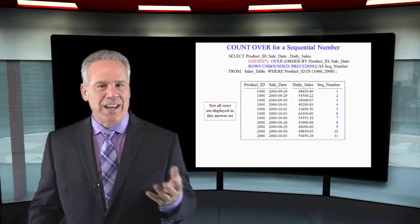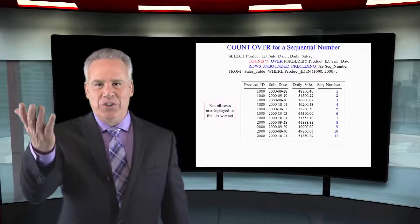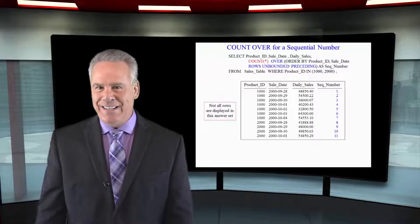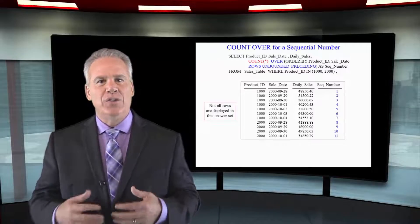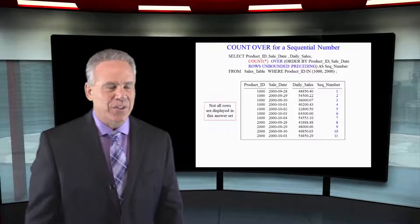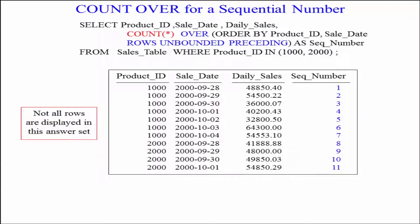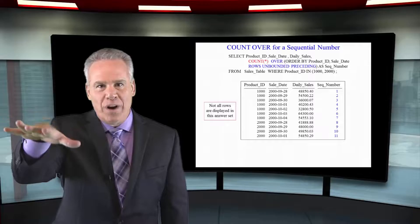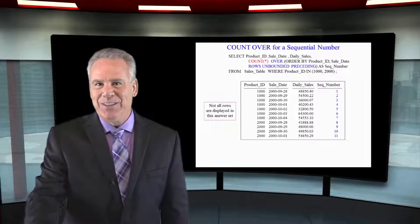In the past videos, we've seen how to get a sequential number using the CSUM, but we're going to use the COUNT OVER to do the exact same thing. We're going to get product ID, sale date, and daily sales. We're going to do a COUNT asterisk OVER ORDER BY product ID, sale date, ROWS UNBOUNDED PRECEDING, and we're going to get a number from one all the way, continuous to the end.